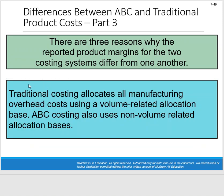A second reason is that traditional costing allocates all manufacturing overhead using a volume-related allocation base, like machine hours or direct labor hours, which are very much tied to the volume of product produced. ABC can use volume-related allocation bases, but it also uses non-volume-related allocation bases, like duration drivers and transaction drivers. So it looks at different things that cause costs — more cost buckets, more cost drivers.